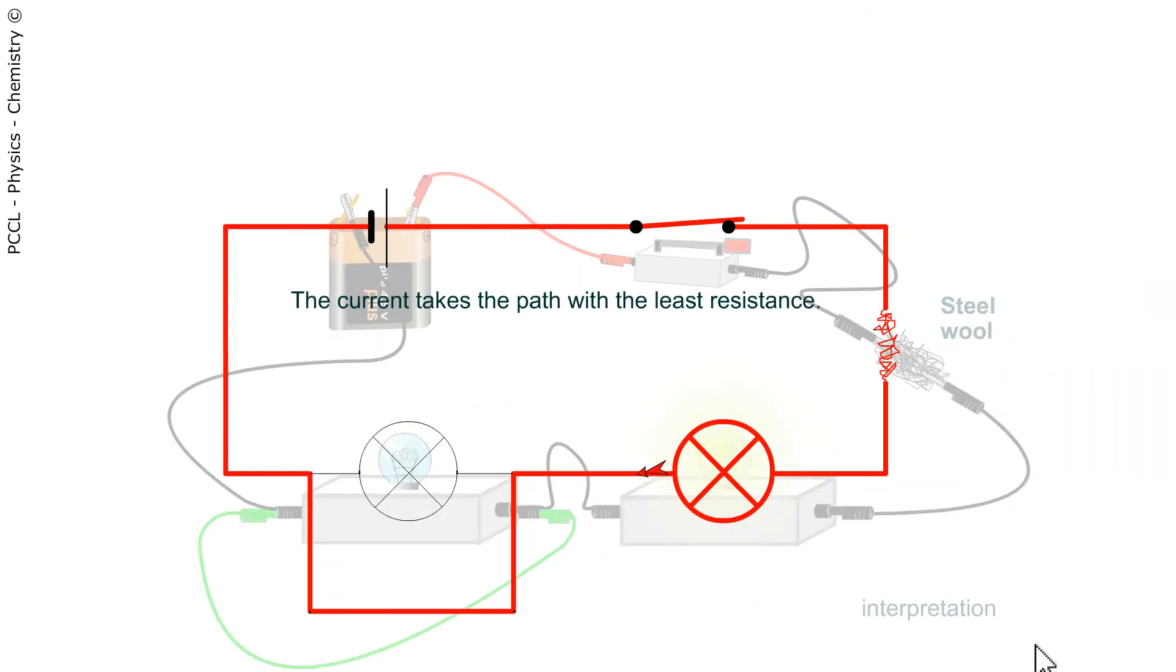The current circulates in the red part which is the part which resists the least. The current has no choice—it has to pass through this bulb which limits it all the same, which therefore spares the battery and the steel wool.